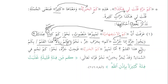As for the tamyiz of kam al-khabariyya, it must be majroor — this is obligatory. For example: 'Kam najmin fi al-sama'i' — how many stars are in the sky! We can see this is kam al-khabariyya used to express a very large number — kathir.